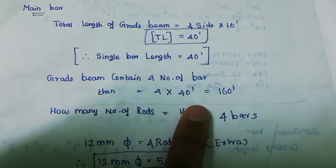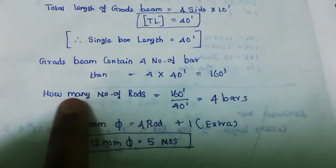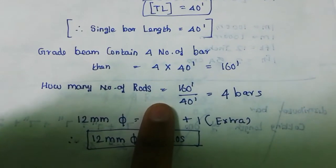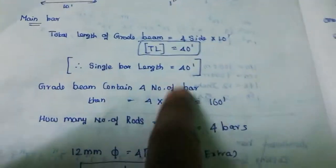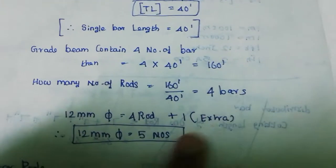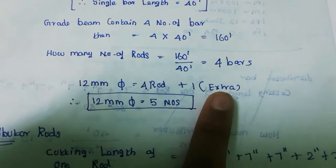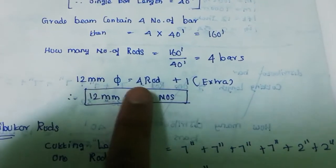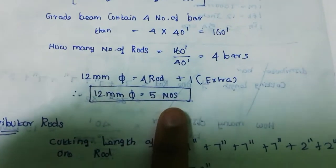The total length is 40 feet. How many number of rods? Divide by 4 bar, then 4 plus 1 — this extra rod gives us 5 rods total.